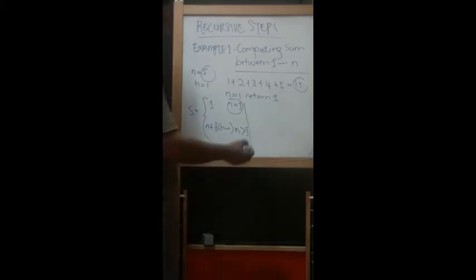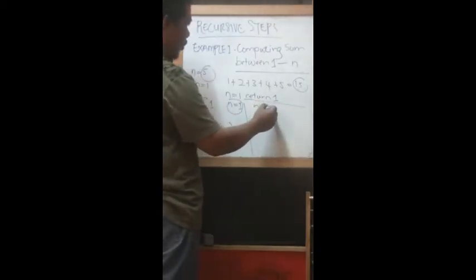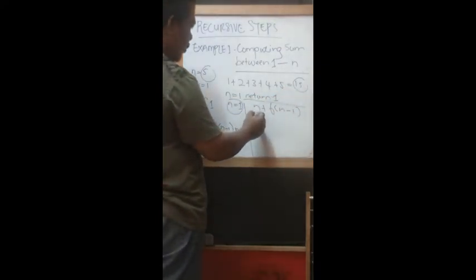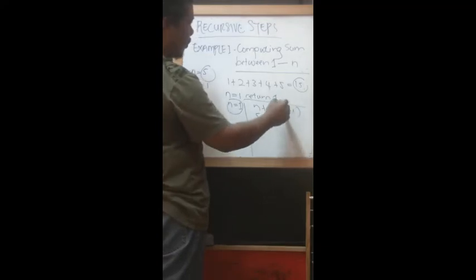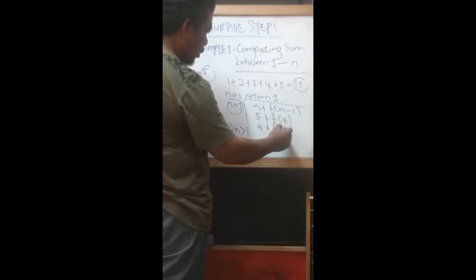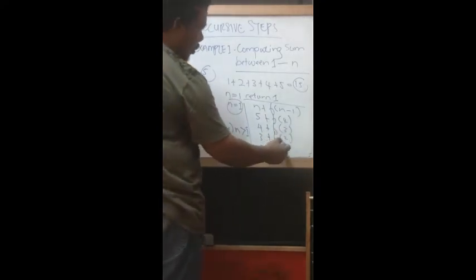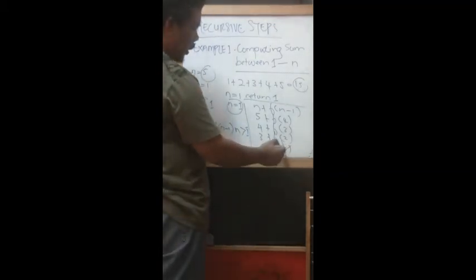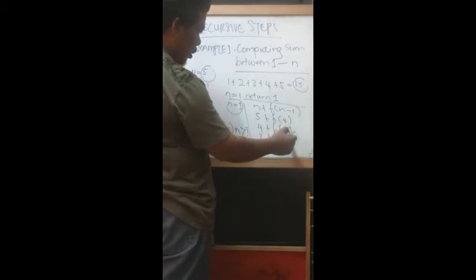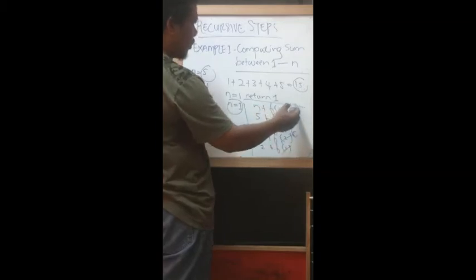Using n equals five as an example, the recursive trace goes: five plus function(four), then four plus function(three), then three plus function(two), then two plus function(one), and one returns one. Unwinding back up: one, two plus one gives three, three plus three gives six, six plus four gives ten, and ten plus five gives fifteen.